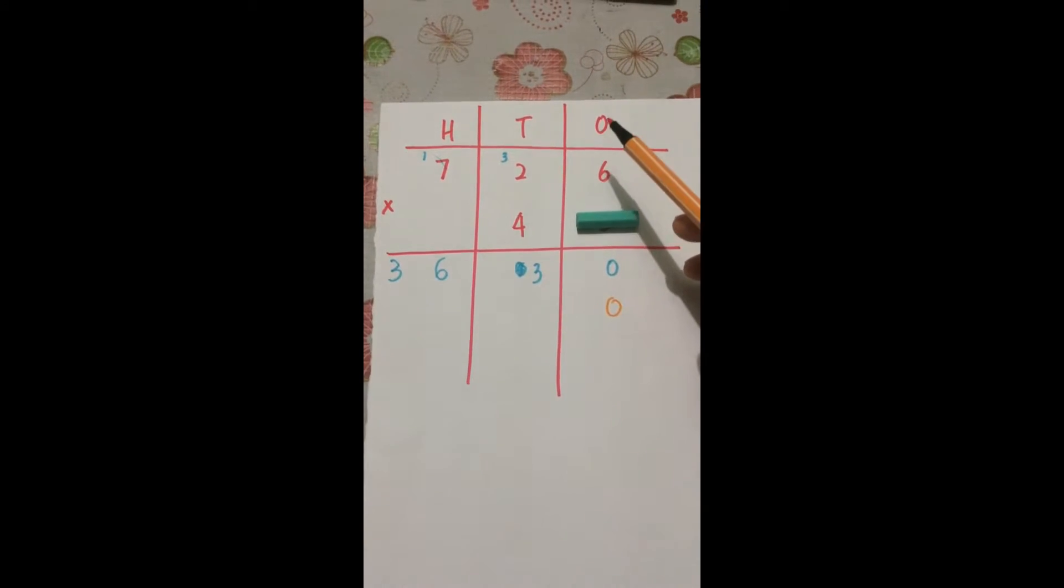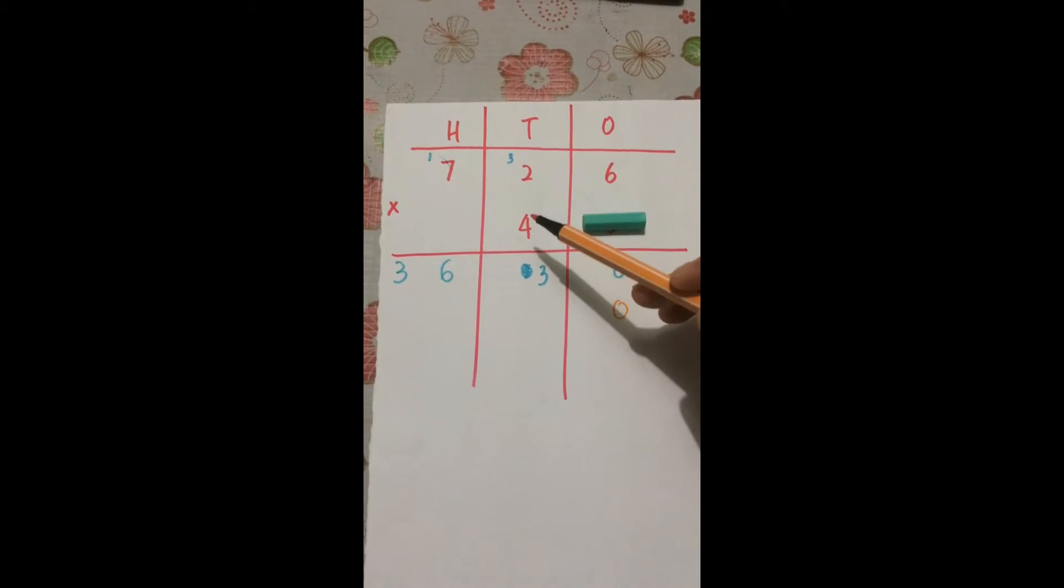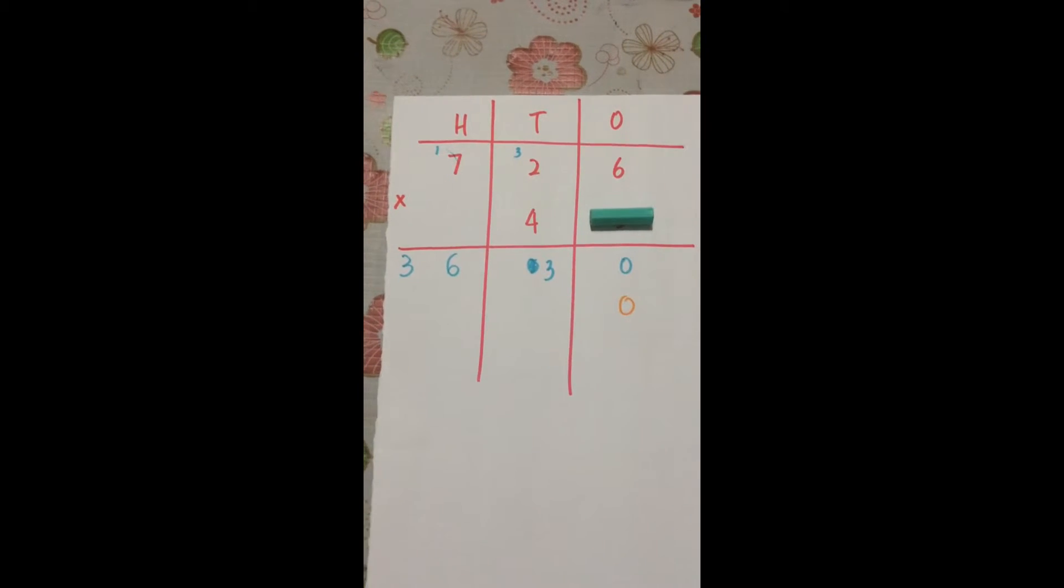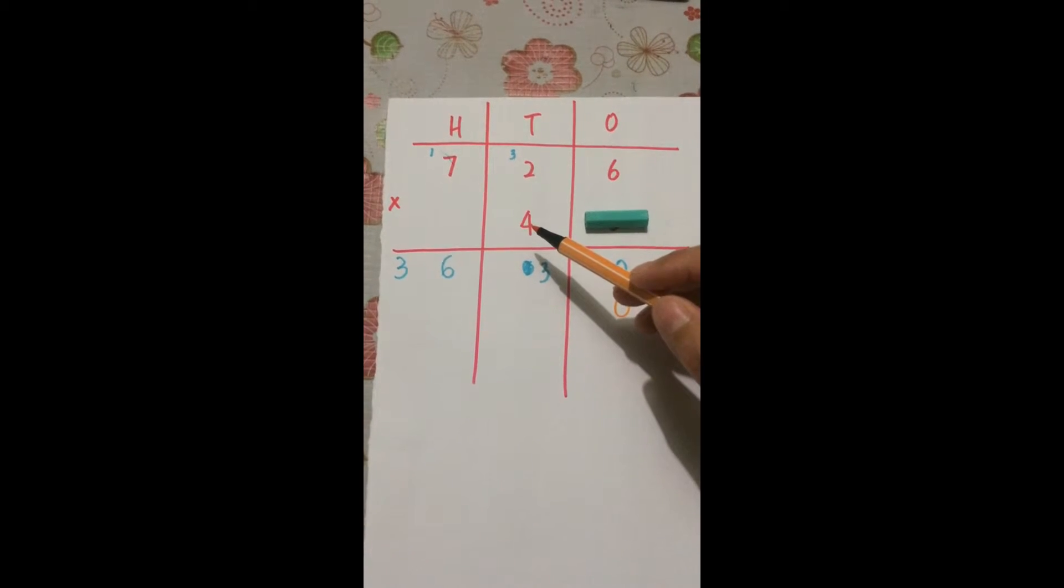Okay, so 1 times 4, 10 times 4, 100 times 4. Let's begin. 6 times 4 is 24.